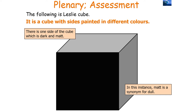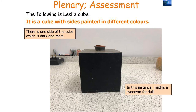The following picture shows us a Leslie cube. This is a cube with sides painted in different colours. One side of the cube is dark and matte — in this instance 'matte' is a synonym for the word dull. So this is an example of a dark matte surface on your Leslie cube.